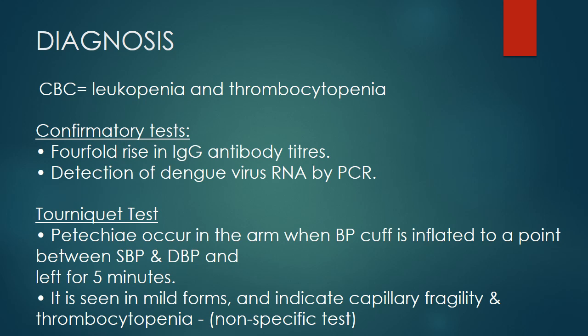The tourniquet test is a non-specific clinical test that can be seen in mild forms of dengue, indicating capillary fragility and thrombocytopenia. Petechiae occur in the arm when the BP cuff is inflated to a point between systolic and diastolic blood pressure and left for five minutes.